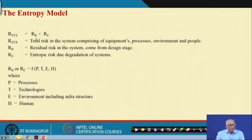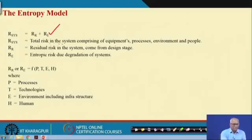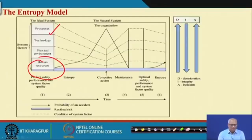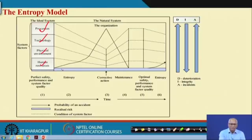If R_R is the residual risk and R_E is the entropic risk, the total system risk is R_R plus R_E — the addition of these two risks. We have to see that these two risks are within the tolerable limit. There are processes, technology, physical, and human factors. If integrity reduces, then deterioration keeps happening and integrity will come down. Why does system deterioration happen? Because of maintenance problems and operation problems.